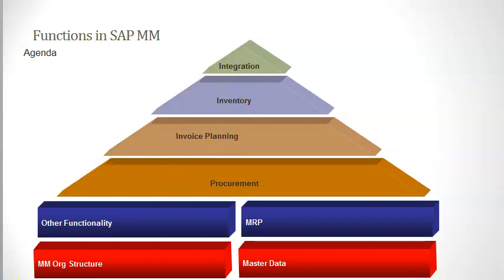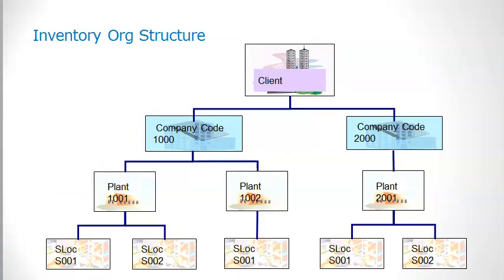The organizational structure in SAP MM: the client is the highest level. Company code represents an independent legal accounting entity — for example, a company within a corporate group where balance sheet and profit and loss statements required by law can be created at the company code level. Plant is an organizational logistics unit where business functions like production, procurement, inventory, plant maintenance, and material planning are carried out. The storage location is an organizational unit that allows differentiation of material stocks within a plant and is used for informative assignment and as a parameter in reporting.